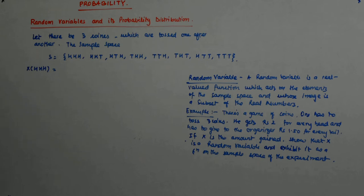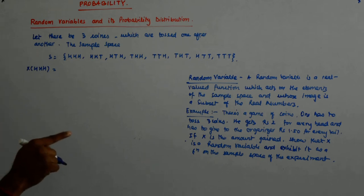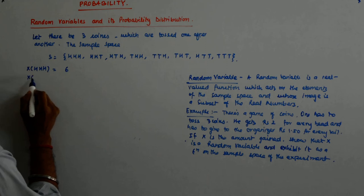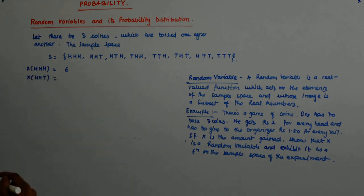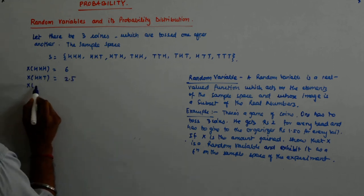So, he gains how much? 2, 2, 2, 6. X(HHH) equals 6. X(HHT): 4 he gains and 1.5 he gives back. So, 2.5.